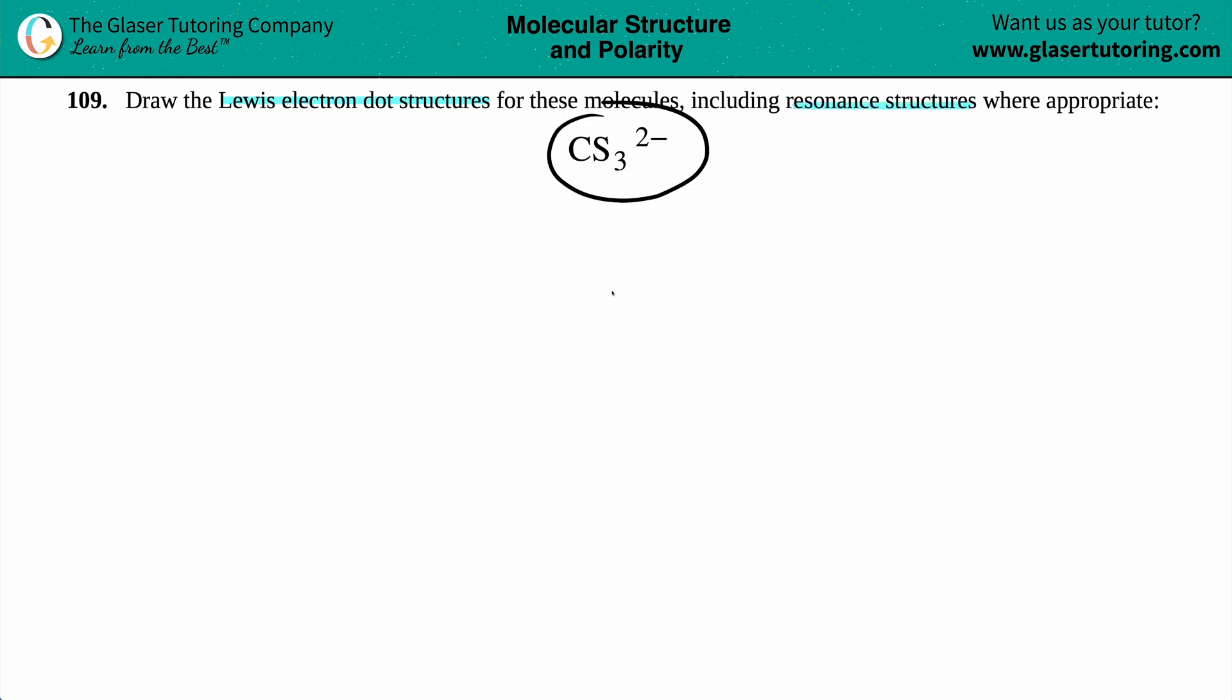So we have to draw the Lewis structure for CS3 2-, and if there are any resonance structures, we've got to draw them as well. Before we even deal with resonance structures, the first thing we have to do is draw the electron structure. Electron dot structure just means we have to draw the lone electrons, the dots, and the bonds.